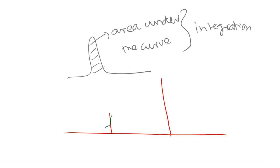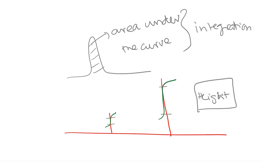When you integrate the peaks, the height of these peaks becomes important. Let us say this height is 6 mm and this is 18 mm. What we can say is that the ratio of the peaks is 1 to 3.